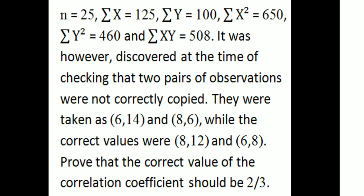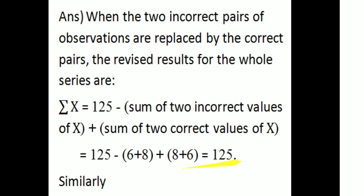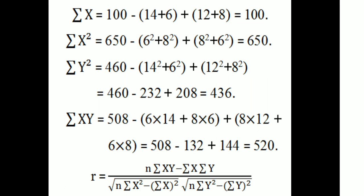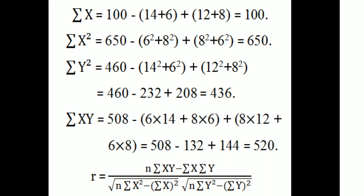The correct correlation coefficient should be found. When the two incorrect pairs are replaced by correct pairs, the revised summation x equals 125 minus (6+8) plus (8+6) = 125, which remains the same. Similarly, summation y is revised to 100 minus (14+6) plus (12+8) = 100.